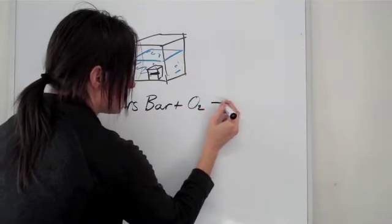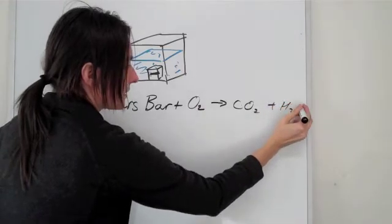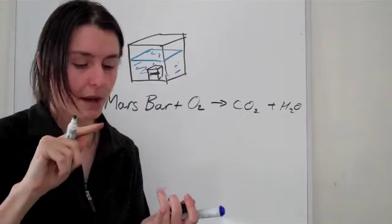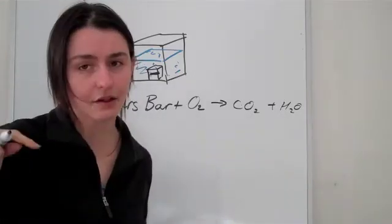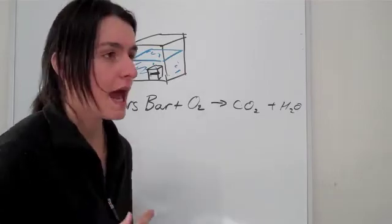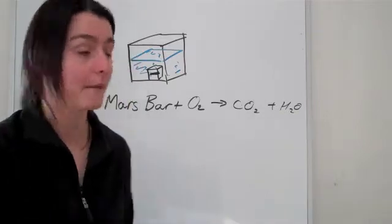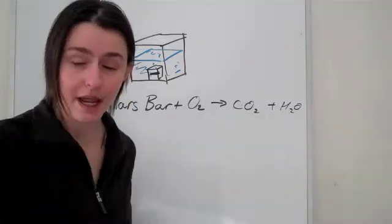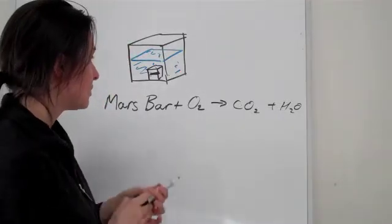Meaning that we basically got Mars bar plus oxygen which gives you carbon dioxide and water. Now a Mars bar can combust basically because it contains a lot of sugars which are combustible, they contain protein a little bit and fat, so all those things can make carbon dioxide and water. And as you know this is a very exothermic reaction.